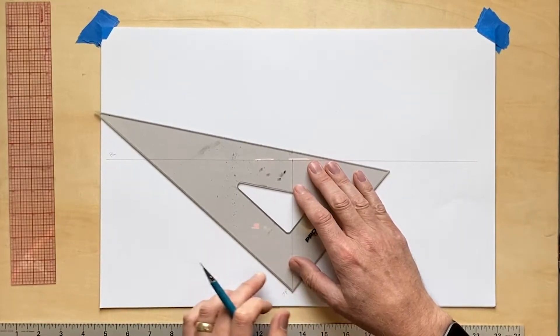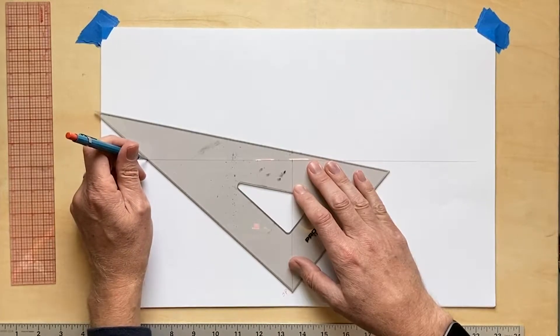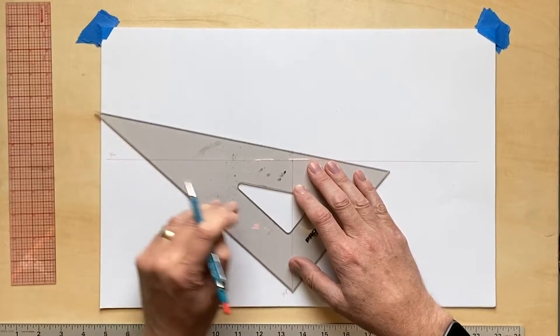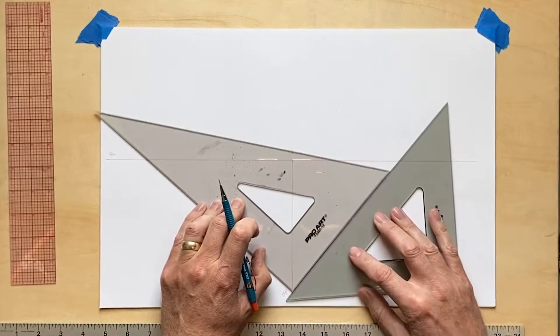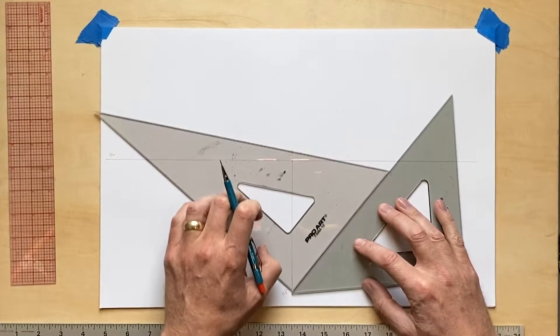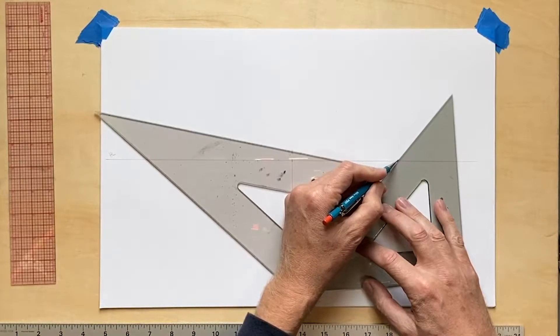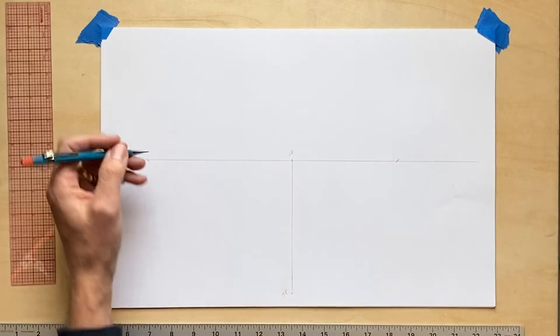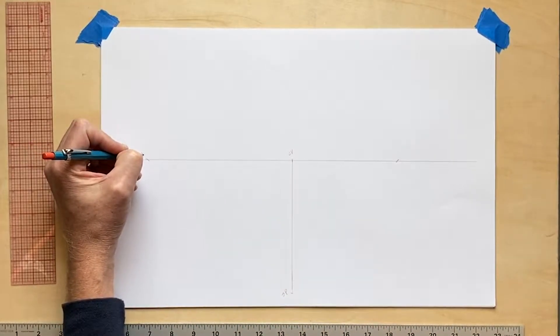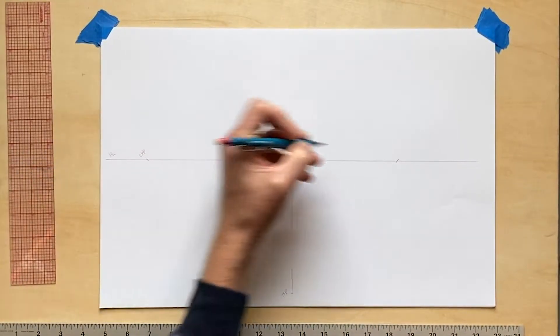So using my triangle, I put the corner of the 90 degree angle on that station point and rotate it to find two points along the horizon line for my vanishing points. And I label those on the left side the LVP, and on the right side the RVP. Notice also that I do not draw lines all the way to the horizon line on those. I just mark the points.